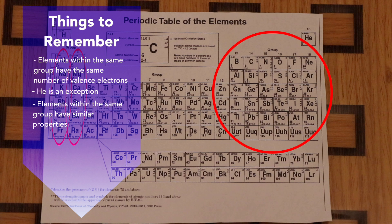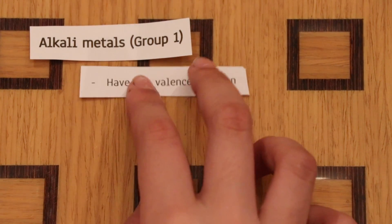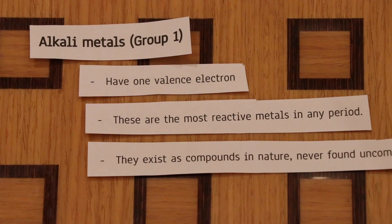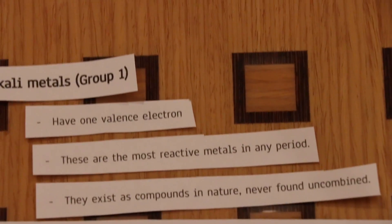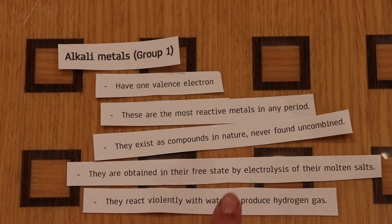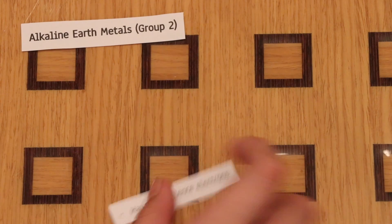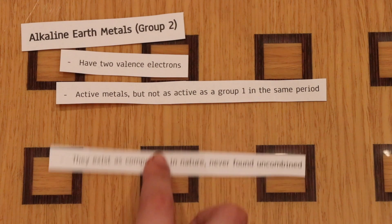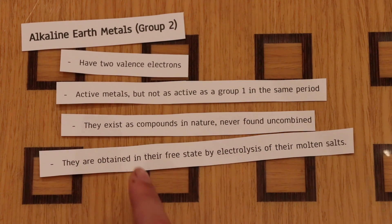Group 1, the alkali metals, have only one valence electron and are the most reactive metals in any period. They exist as compounds in nature, are never found uncombined, and are obtained in their free state by electrolysis of their molten salts. They also react violently with water to produce hydrogen gas. Group 2, the alkaline earth metals, have two valence electrons. They're active but not as active as Group 1, also exist as compounds, never found uncombined, and are likewise obtained by electrolysis of their molten salts.